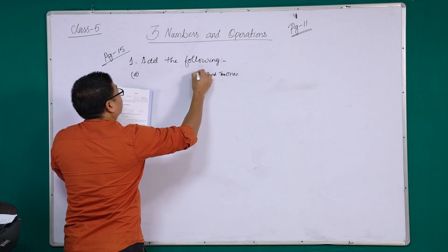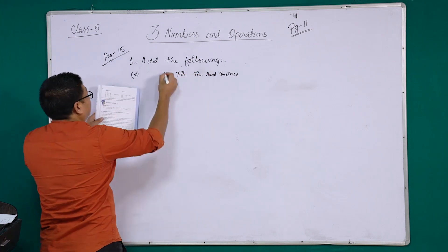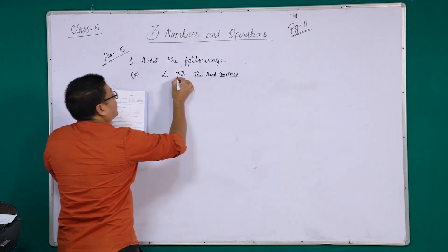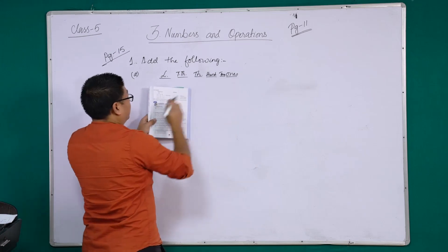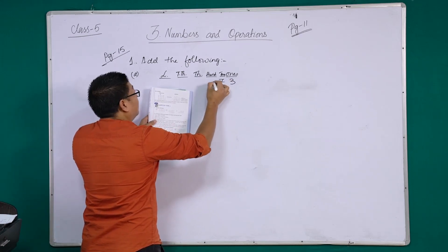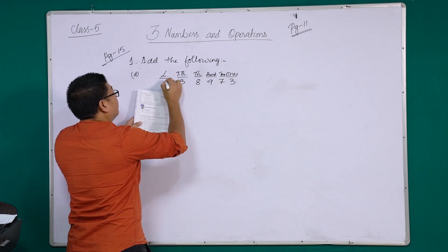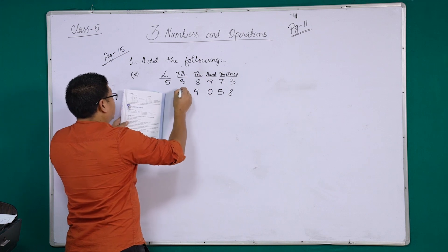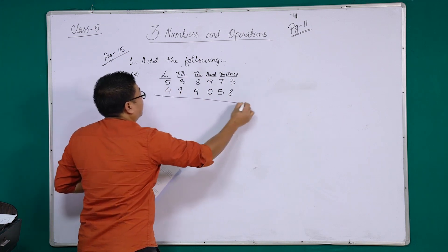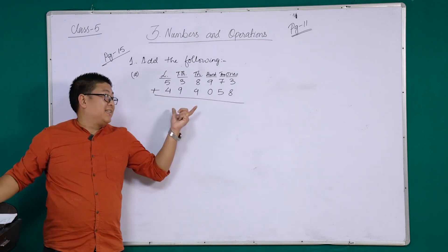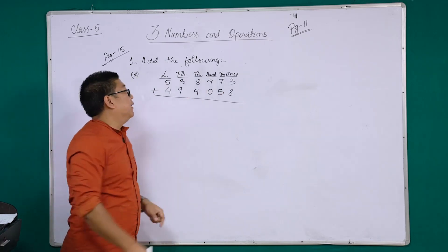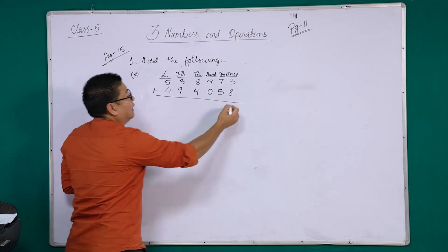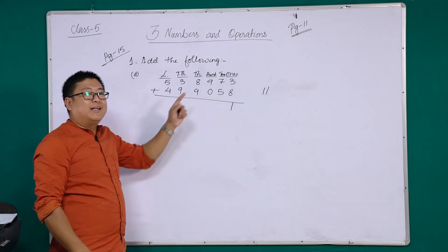For your understanding, the columns are: ones, tens, hundreds, thousands, ten thousands, and lakh. The first number is 3 in lakh, 5 in ten thousands, 8 in thousands, 9 in hundreds, 7 in tens, 3 in ones. The second number has 8 in ones, 5 in tens, 0 in hundreds, 9 in thousands, 9 in ten thousands, 4 in lakh. Now let's see if this is done with or without regrouping. Eight plus three is eleven — this is with regrouping.